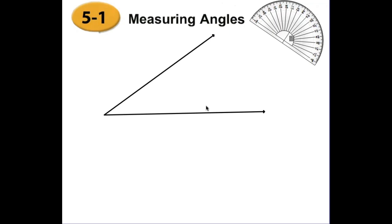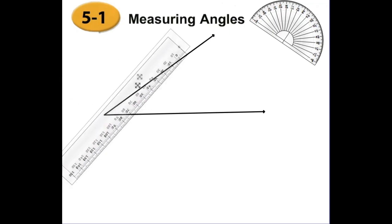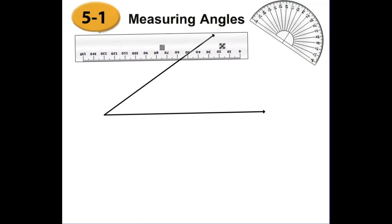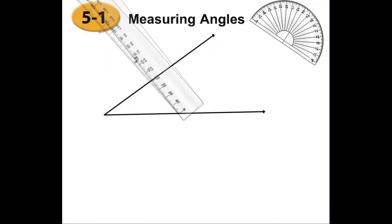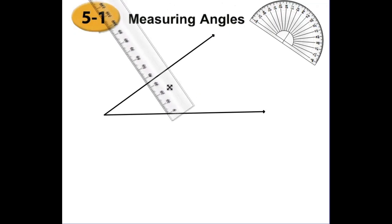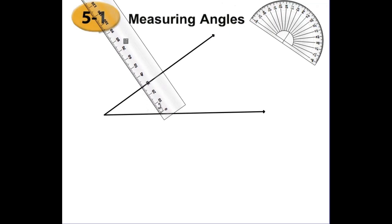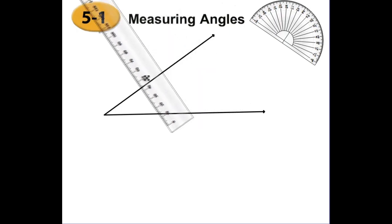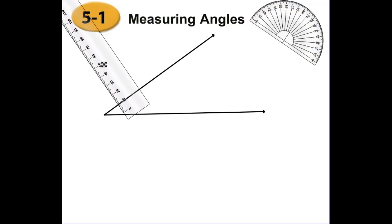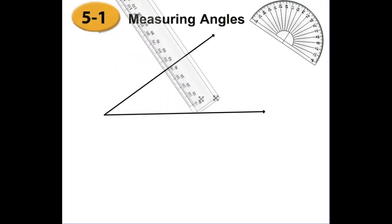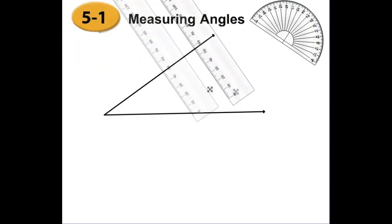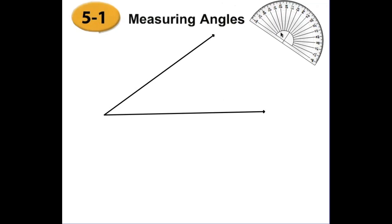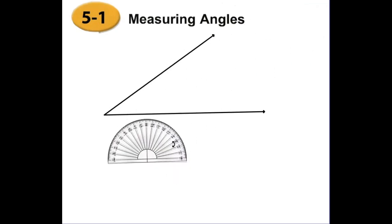To measure an angle we use a protractor, but first let me show you why we cannot use a ruler. As you see here the distance between the two sides of the angle is 65 millimeters, or 6.5 centimeters. If I close the vertex it changes — it depends on where I place the ruler. So the ruler doesn't work. What we use instead is this — a protractor.